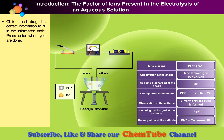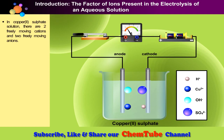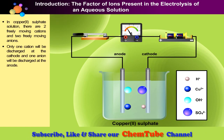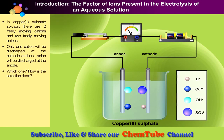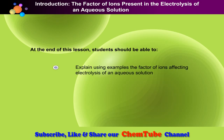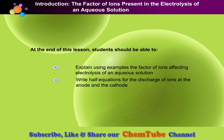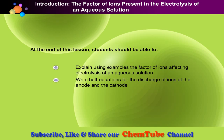Both ions will be discharged at the electrode. Now take a look at the electrolysis of copper 2 sulfate. There are two cations and anions in the electrolyte; only one cation and one anion will be selectively discharged at the electrodes. At the end of this lesson, students should be able to explain, using examples, the factor of ions affecting electrolysis of an aqueous solution, and write half equations for the discharge of ions at the anode and cathode.